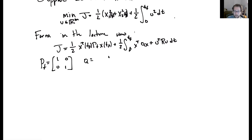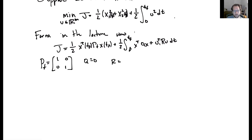Q is going to be equal to zero, because Q doesn't appear in the running cost integral. And R, since u is just a scalar, R is equal to one.